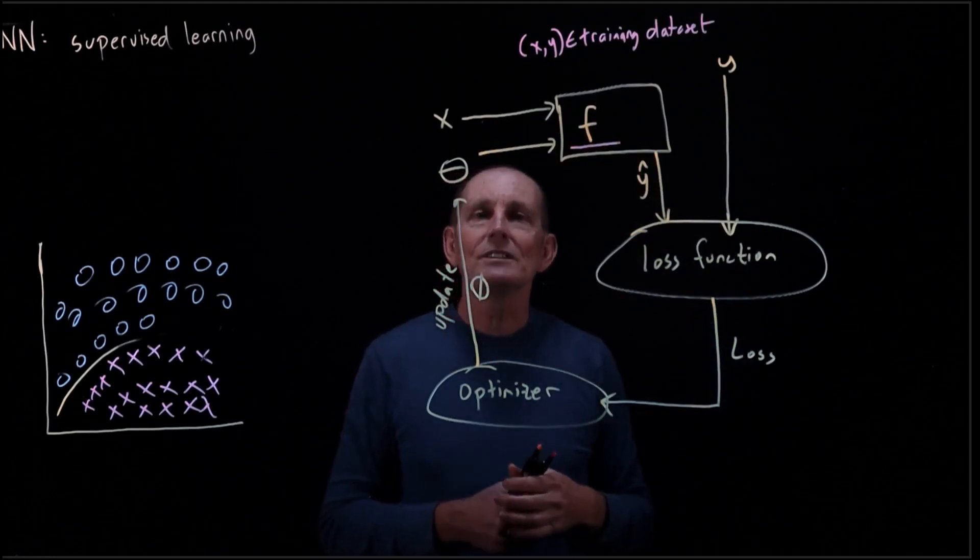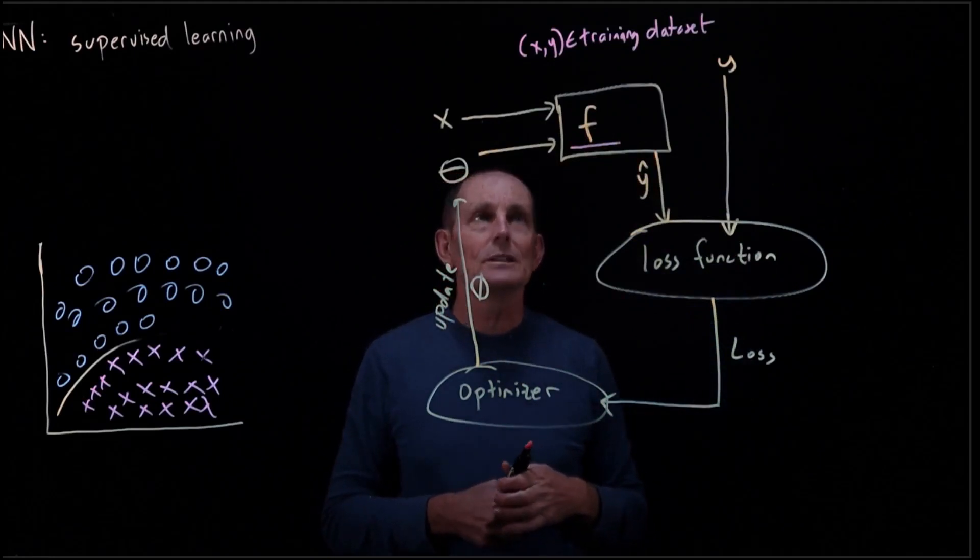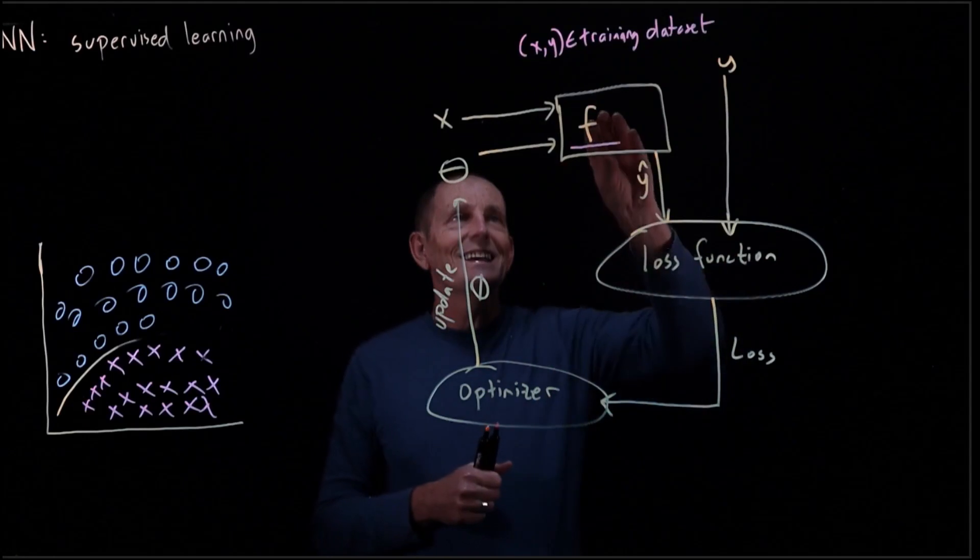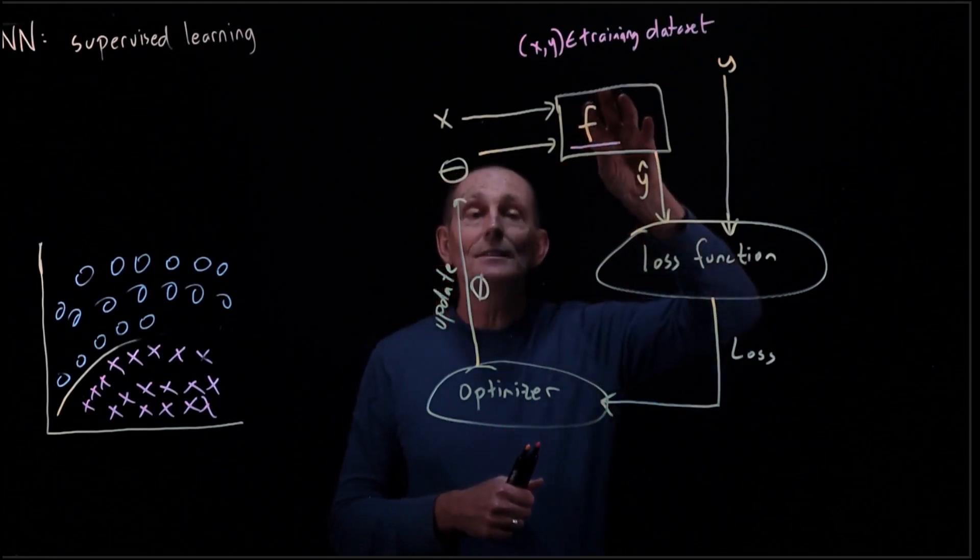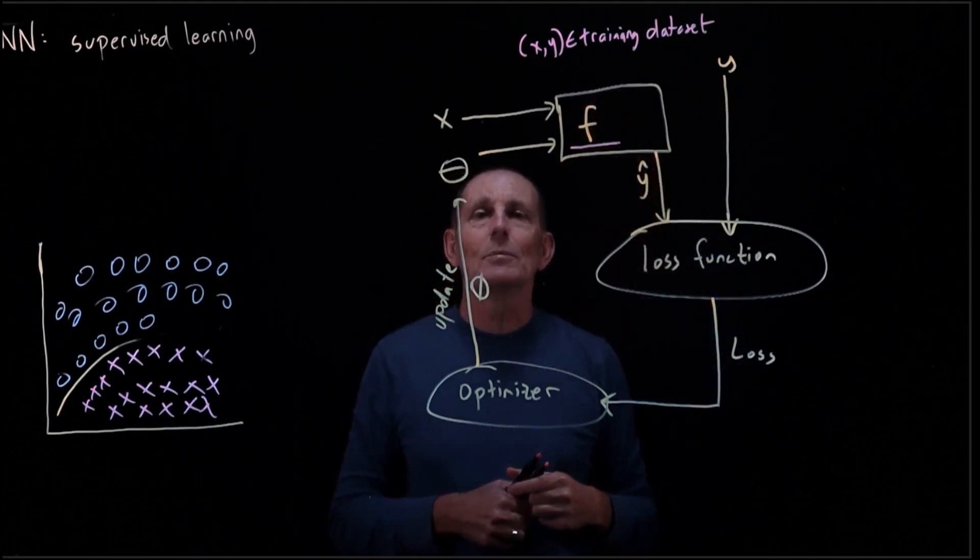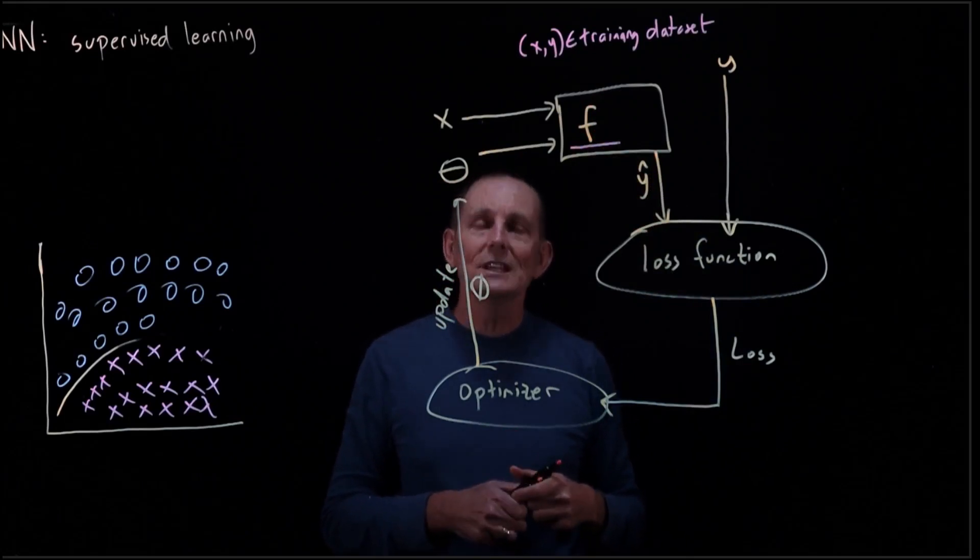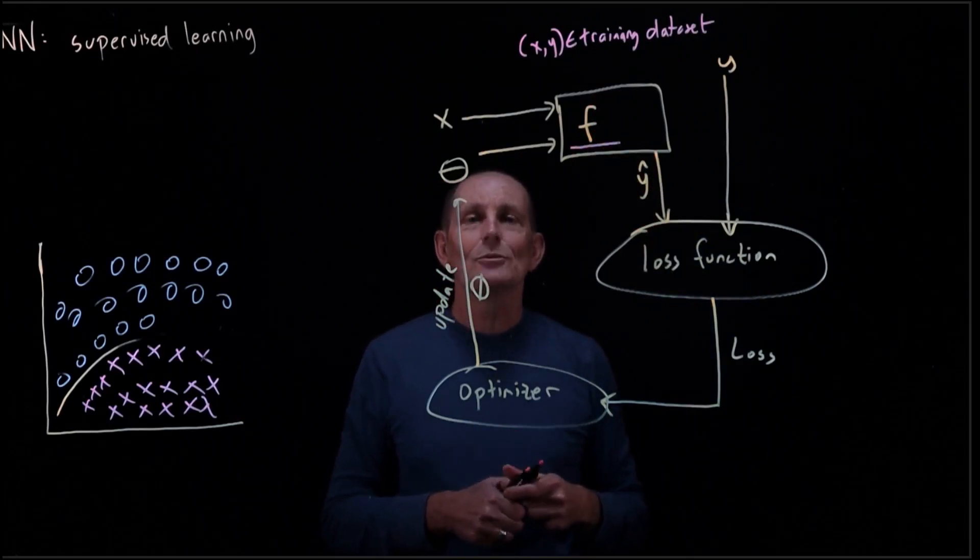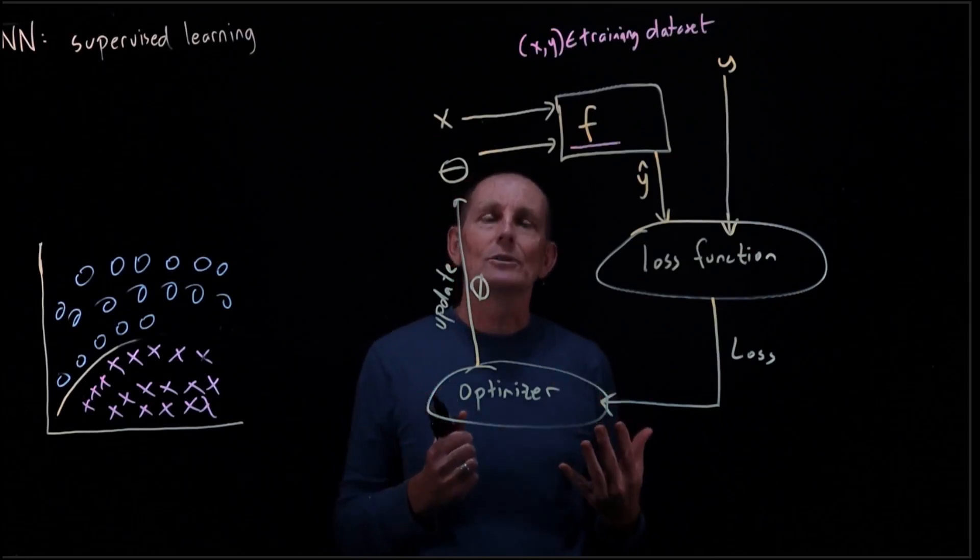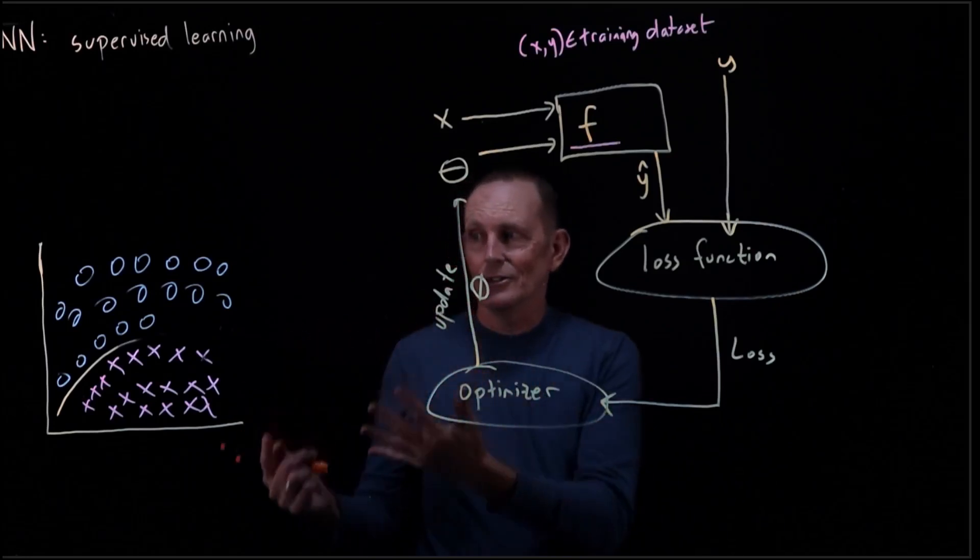However, we're going to be making one simplifying assumption for the first two three weeks. And that simplifying assumption is that our universe f here is simple. And that we're just going to be looking at polynomials. Sometimes even just linear functions. But polynomials. And the reason for that is because we have a lot of intuitions about polynomials.